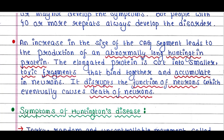An increase in the size of the CAG segment leads to the production of an abnormally long huntingtin protein. The elongated protein is cut into smaller toxic fragments that bind together and accumulate in neurons, disrupting their function and eventually causing death of neurons.